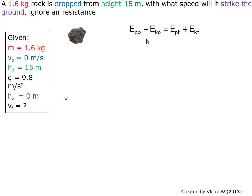Step 2 is to write down the formula. Initial potential energy plus initial kinetic energy equals final potential energy plus final kinetic energy.